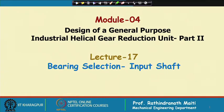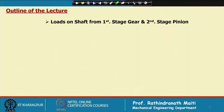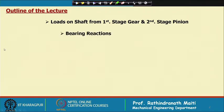In module 4, this is the second lecture and we shall continue with the bearing selection for input shaft. In this lecture, I shall cover loads on shaft from first stage gear and second stage pinion. We have considered the intermediate shaft, on which there are the gear of first stage and pinion of second stage.